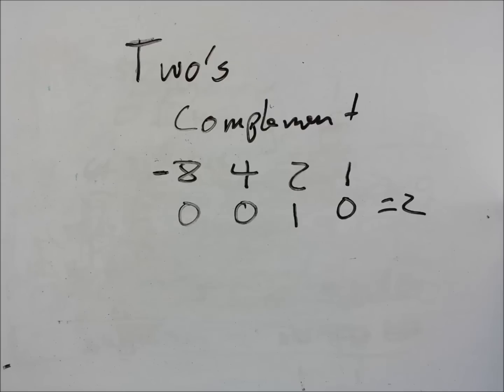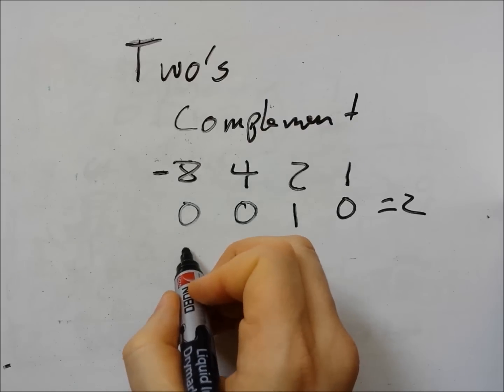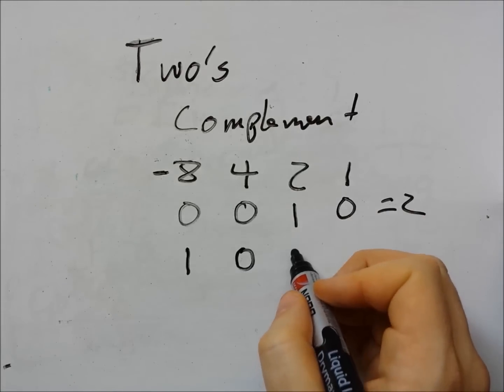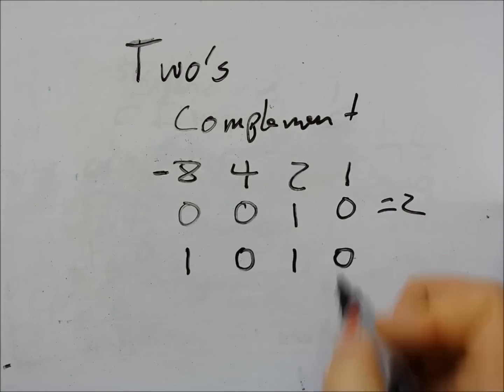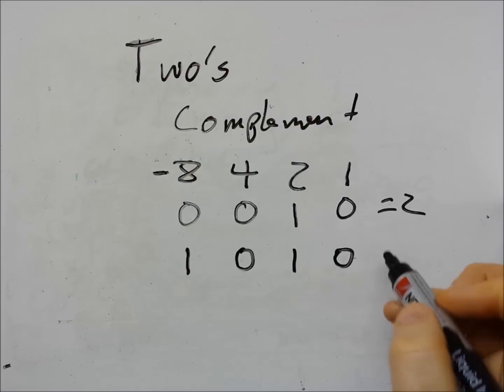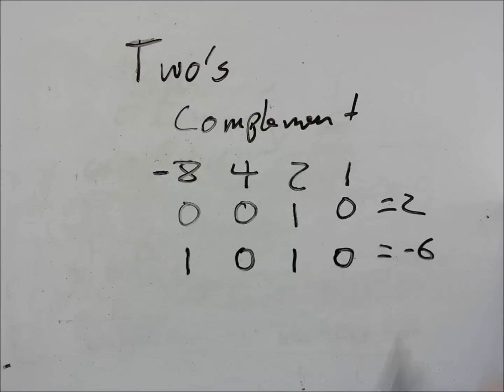To say minus six I'm going to say one. So that's minus eight. No fours. We're going to have a two and zero. So minus eight plus two is equal to minus six. Simple as that.